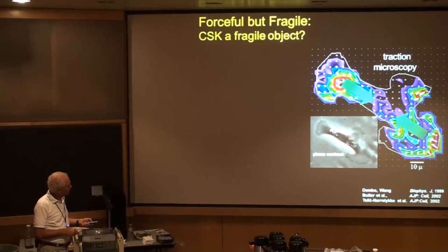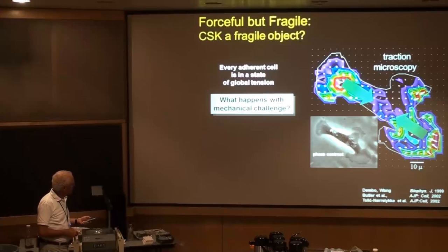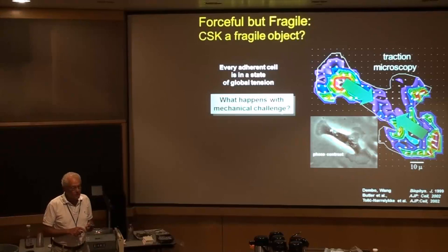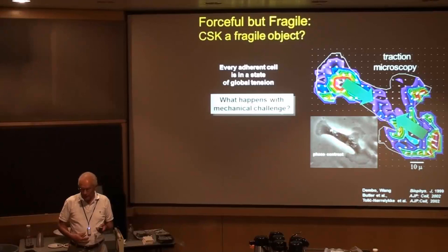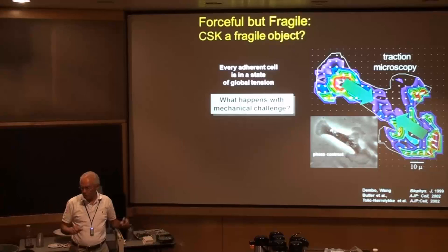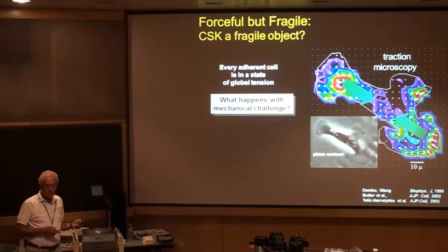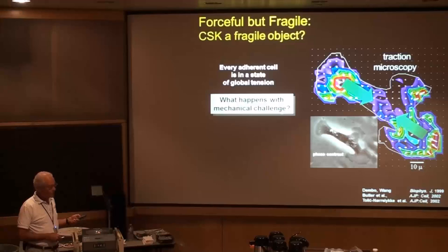This is a nearly universal property of all cells: every adherent cell is in a state of global tension. Stretch happens all the time — every time you take a breath, every time your heart beats, during peristalsis in the gut, during development. In the embryonic lung, there are actually waves of peristalsis that go down the airway, thought to be crucial for development. So stretch is really really important — the question is, what happens to these forces when you stretch the cell in a physiologic way?